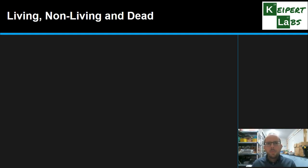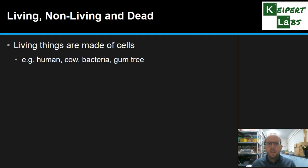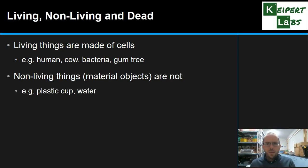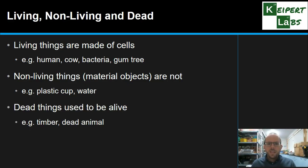Recapping what we mean by living, non-living and dead: living things are made up of cells and share these seven characteristics. Things like a human being, a bacteria, a cow, a gum tree — plants, animals, you name it. Non-living things or material objects are not made up of cells — so a plastic cup, water, sand, a cloud — they are non-living. And dead things used to be alive, used to be made up of cells, but they now don't have the features of a living thing. So timber or a dead animal are not considered to be alive anymore — they're dead.